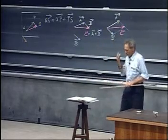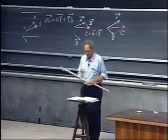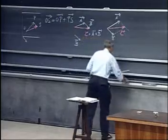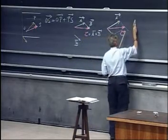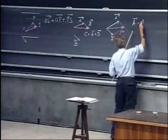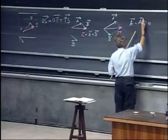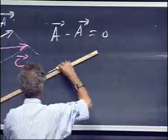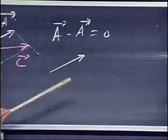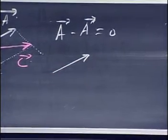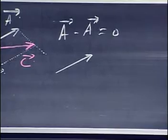What is the meaning of a negative vector? Well, A minus A equals zero. Vector A subtract vector A equals zero. So here is vector A. So which vector do I have to add to get zero?